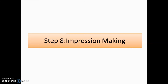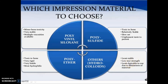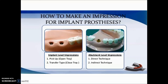For impression making, the ideal material is polyvinyl siloxane — it has minor bone toxicity, is very stable, and is available in multiple viscosities. Polysulfide is avoided because it is toxic to bone, slow-setting, and has an unpleasant taste. Polyether is avoided because it is toxic to bone, very rigid, and hydrophilic. Hydrocolloids are less stable with poor tear strength. Therefore, polyvinyl siloxane is the best impression material for implant impressions.